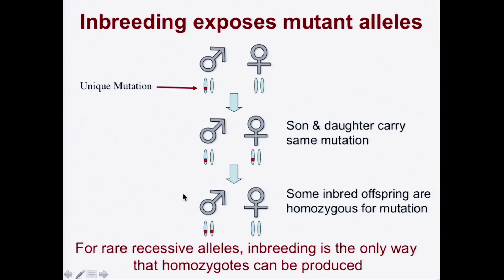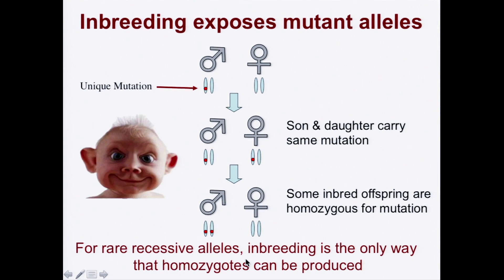Rare recessive alleles are common. Most mutations are recessive — they just make things not work, but they're silent, because the healthy version continues to produce a healthy protein. For rare recessive alleles, this kind of inbreeding is the only way that these kinds of homozygotes can be produced. So, don't marry your sibling.